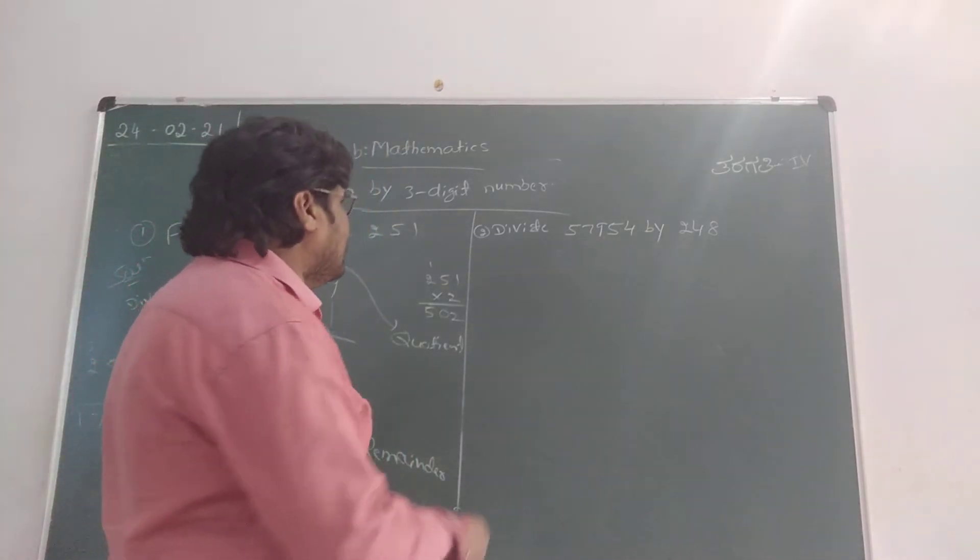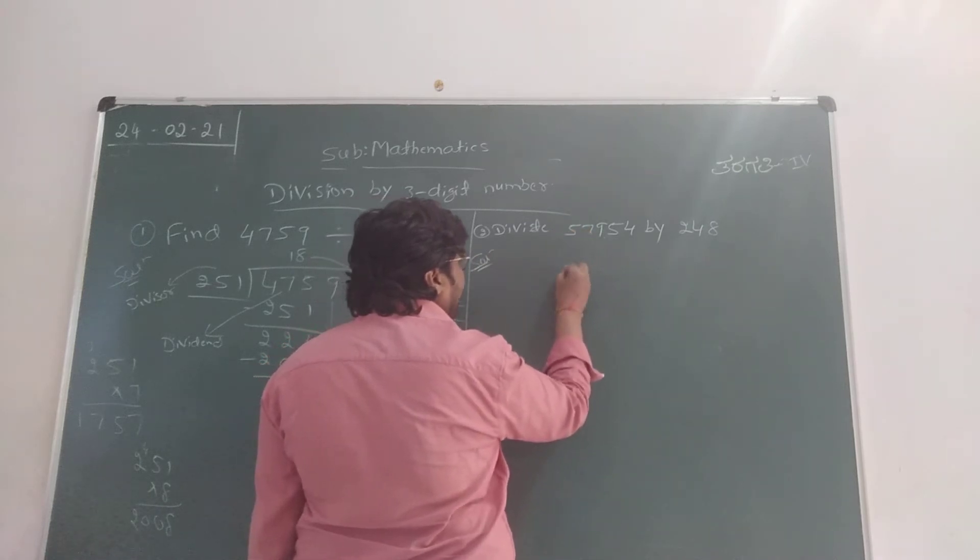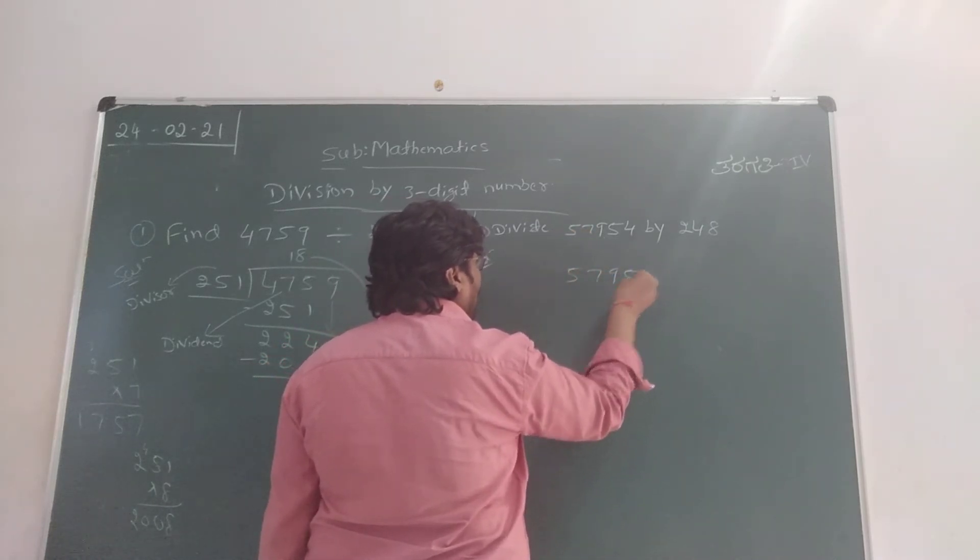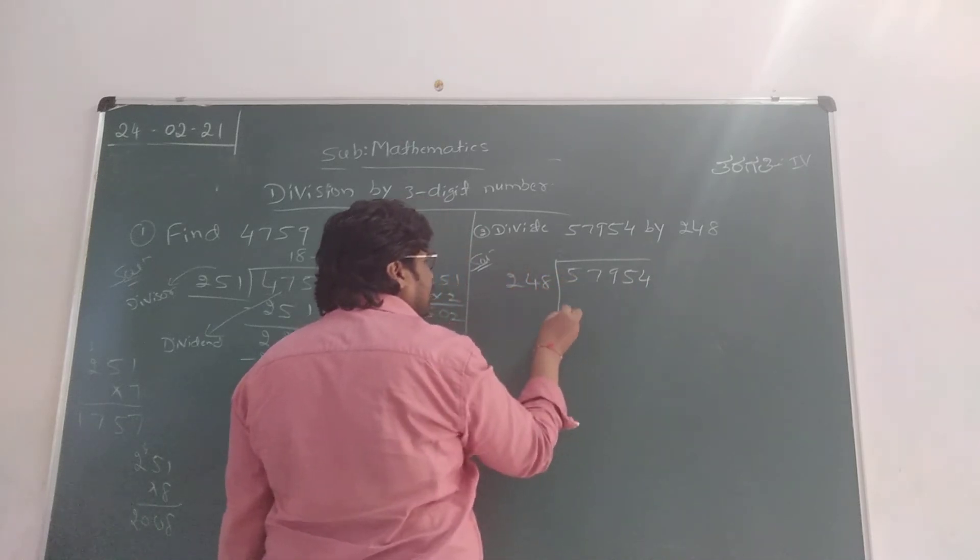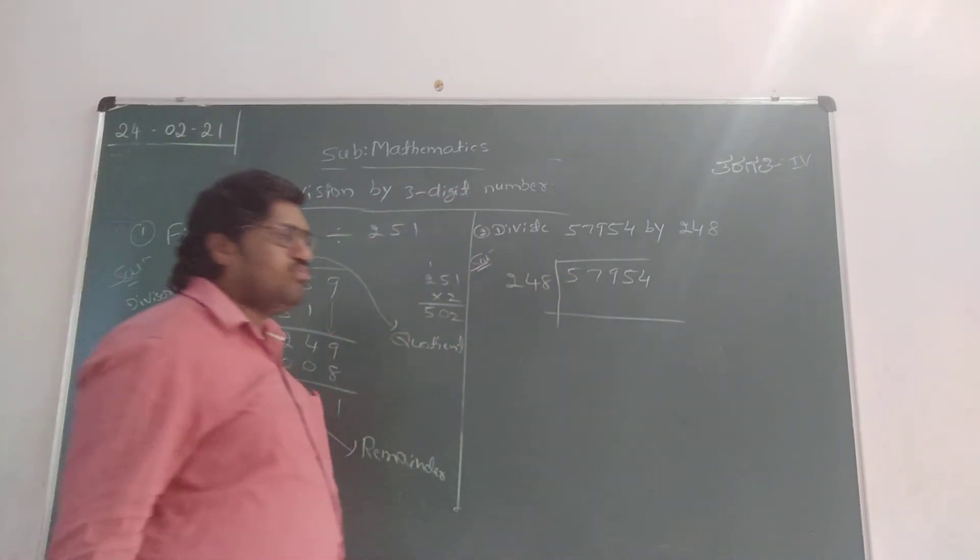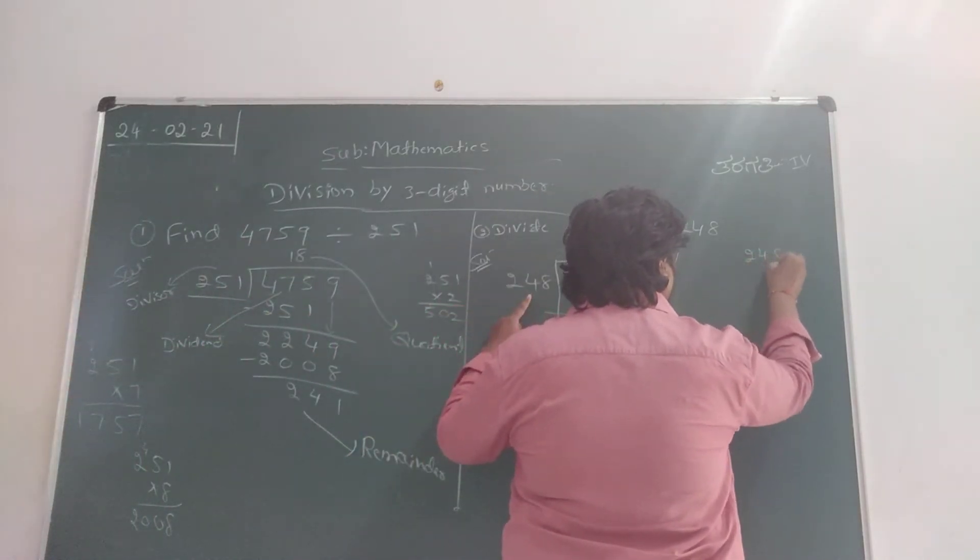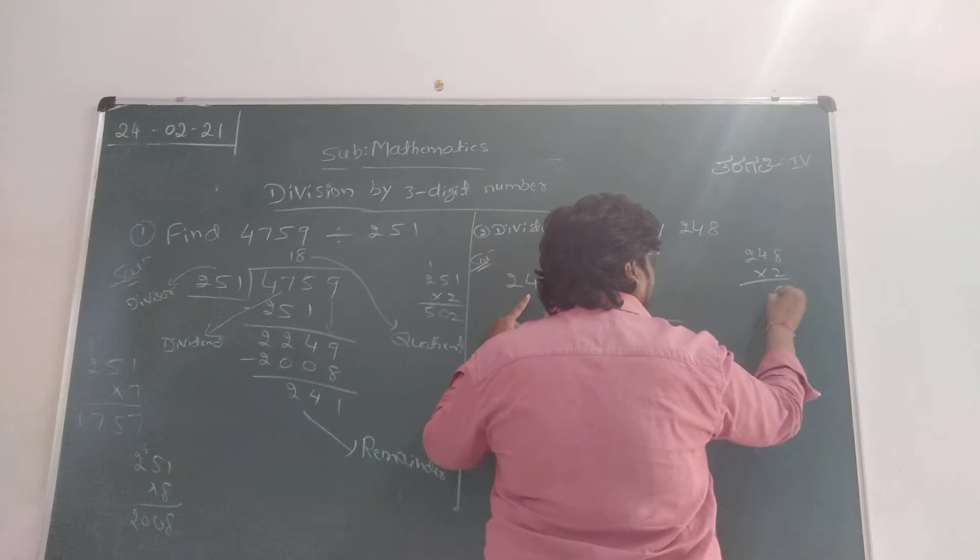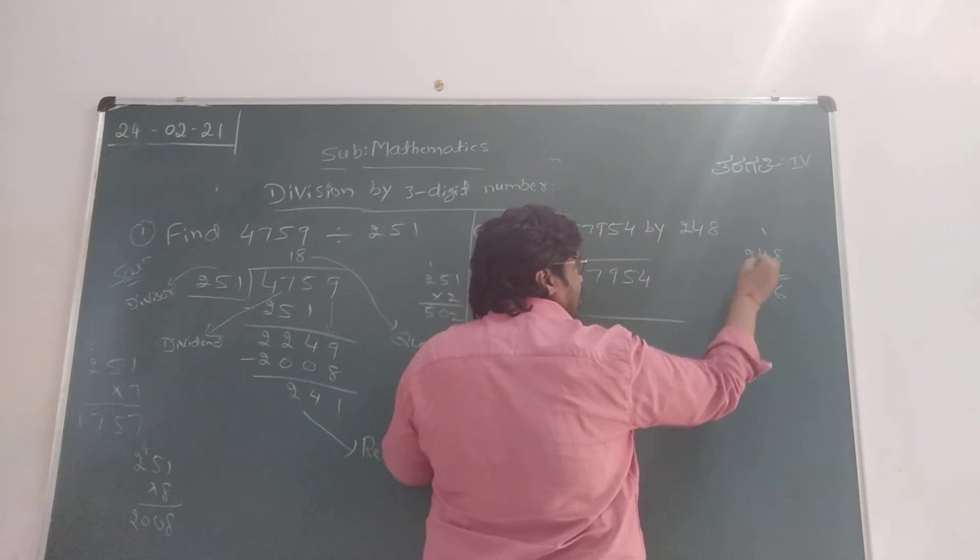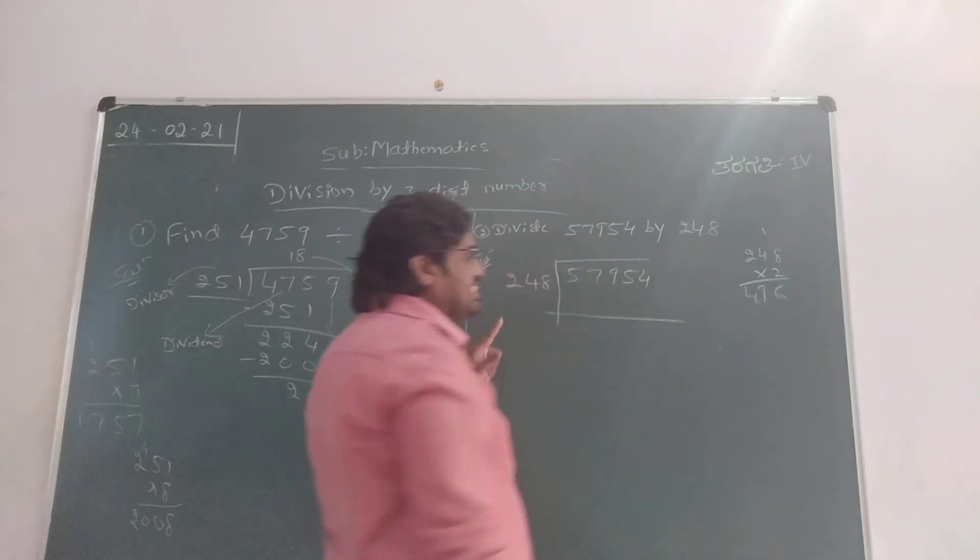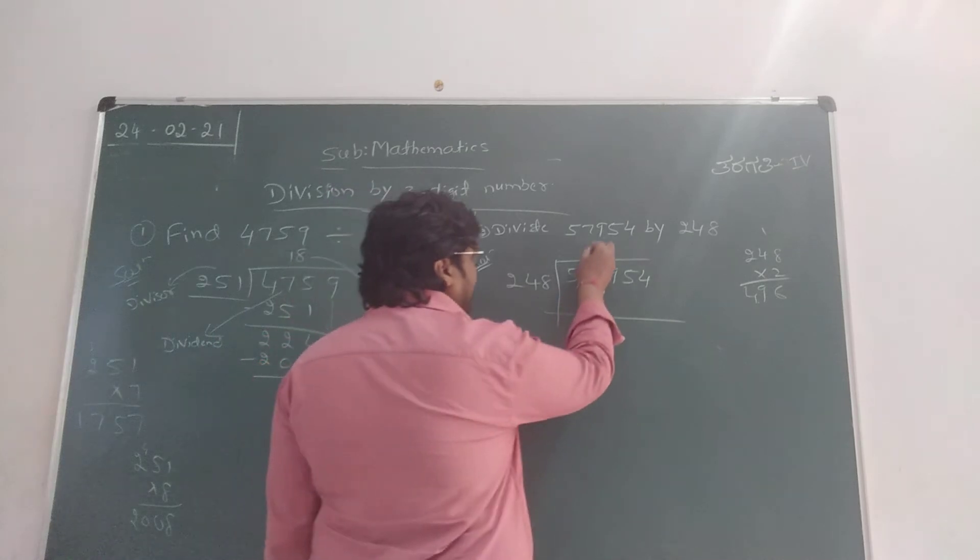Now similarly, you can see one more question. We have to divide 57954 by 248. So children, 248 times 2: 2 eights are 16 carry 1, 2 fours are 8, 8 plus 1 is 9, 2 twos are 4. It is 496, which is near 579.